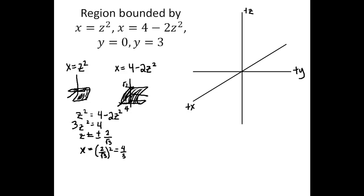On my final graph I want to show a region enclosed by those two parabolic cylinders, which form a front and back to my surface. What I don't have from those graphs is a left and right side. Y equals 0 is just the XZ plane, giving us a left side to our region. And Y equals 3 will be parallel to the XZ plane but offset at Y equals 3, giving us a flat surface that forms the right side. So those two planes give us a left and right side to our region.